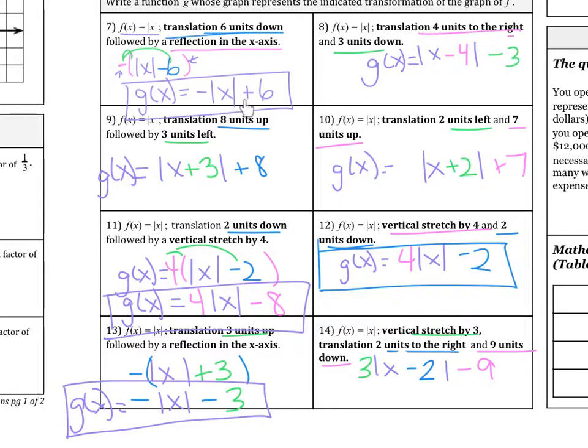Okay, here it is if you tried it out. Number 9, translation 8 units up. So I added 8. Then it moved 3 units to the left, so plus 3 in the inside, so opposite. Left and right is always inside, up and down is always outside. Number 10, 2 units left, so I added 2 in the inside. Then 7 units up, plus 7.